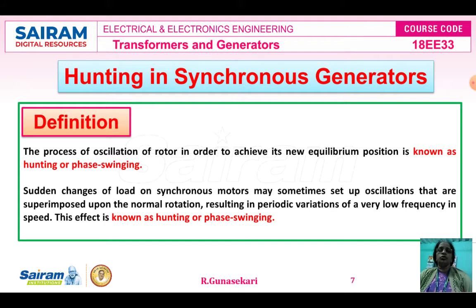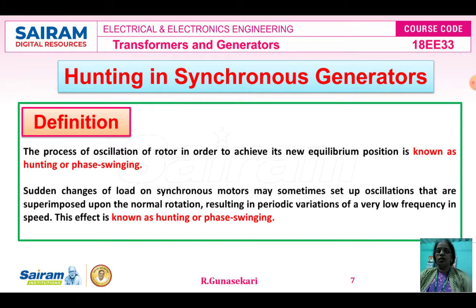When the rotor goes to its new equilibrium position under the sudden changes of load in the synchronous generator, every synchronous machine has a natural time period of free oscillation. If the driving torque of the alternator is pulsating, the rotor is pulled periodically ahead or behind its normal position. If this oscillation equals the natural time period of free oscillation, the condition is called hunting, also known as surging or phase swinging.